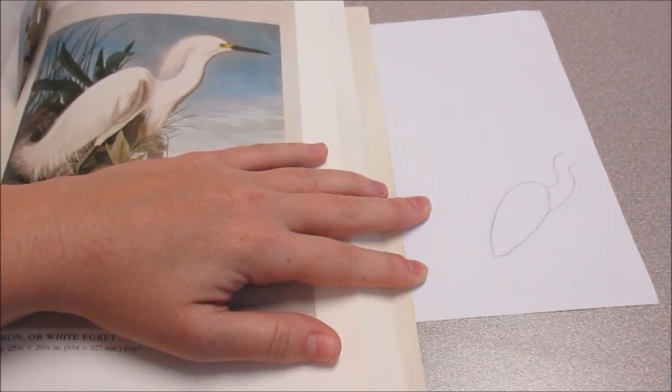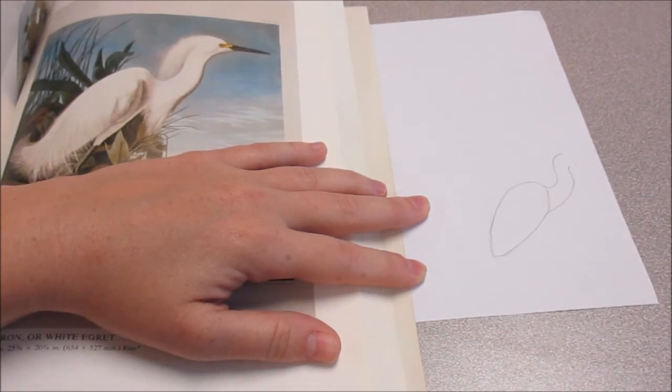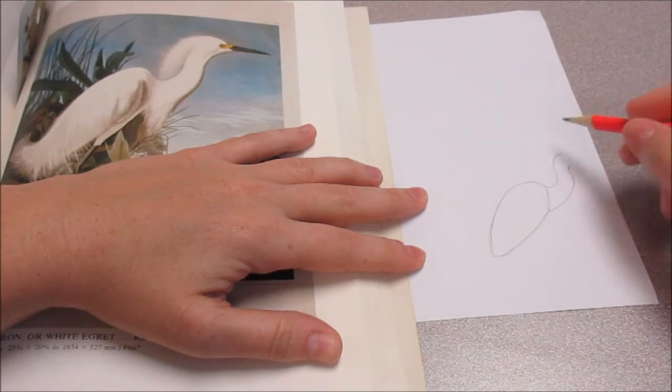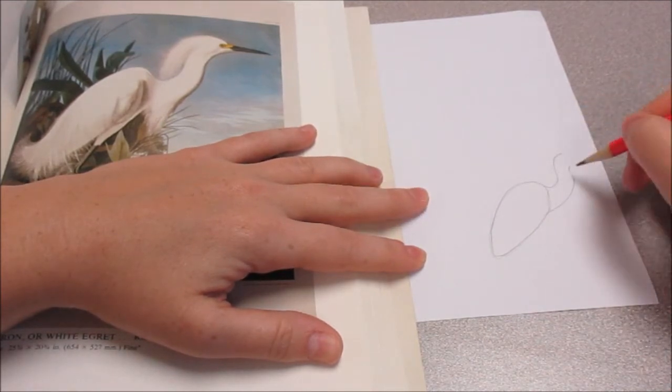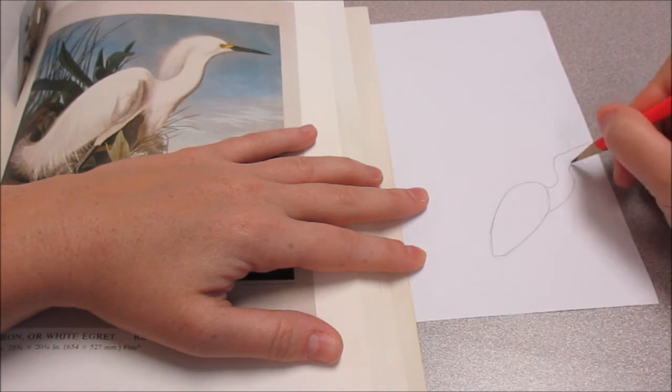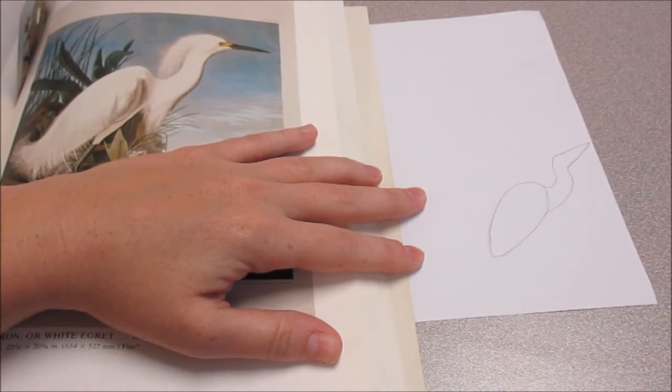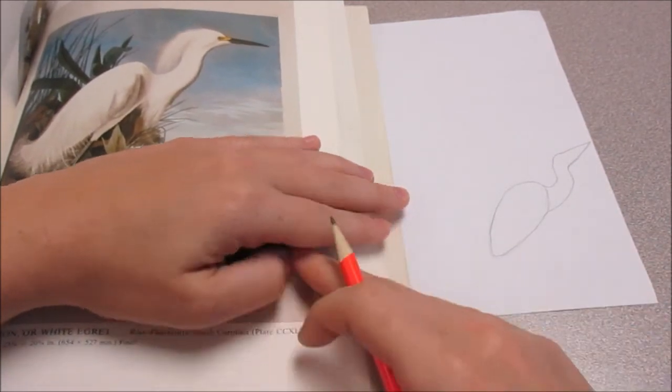So I've made these S's sort of match here. Then I'm gonna make his beak. He could be looking up or down. I'll do kind of an up, sort of.